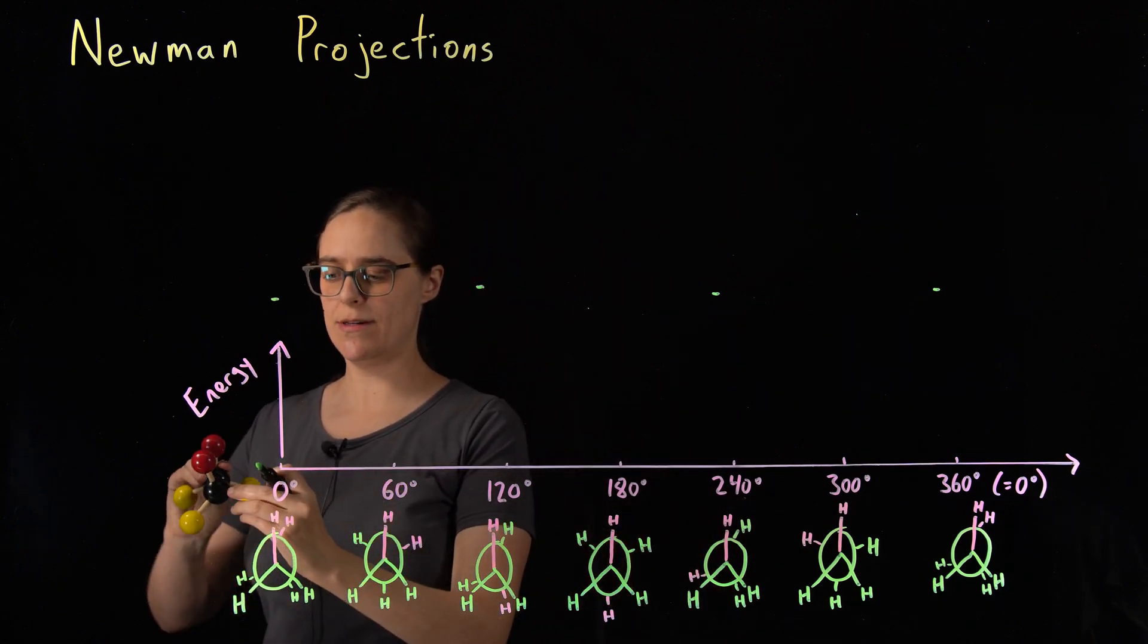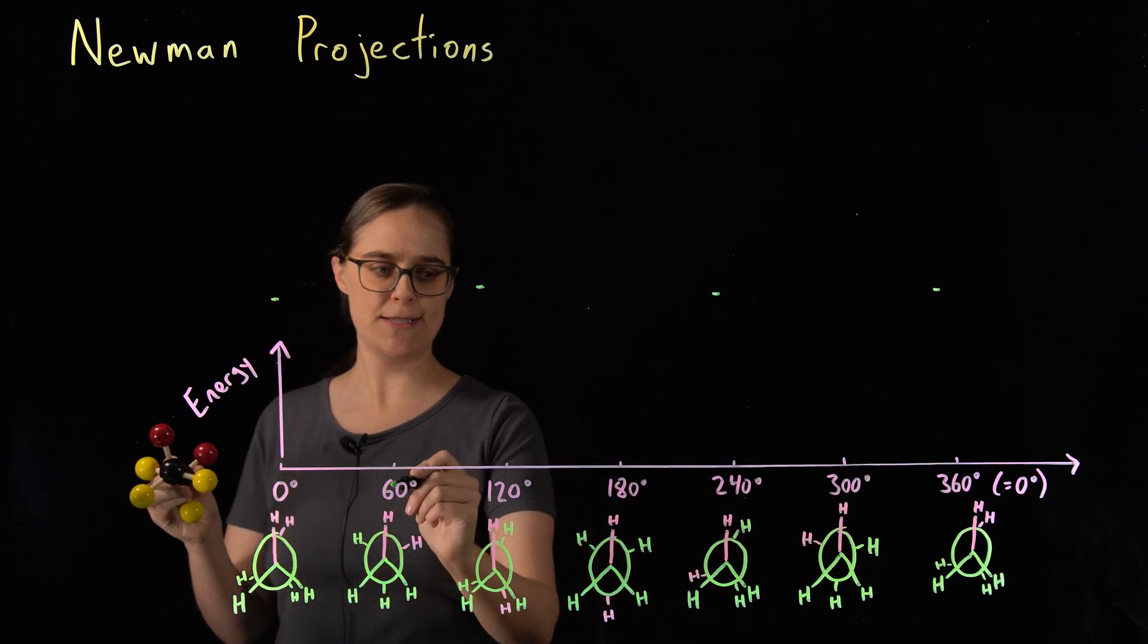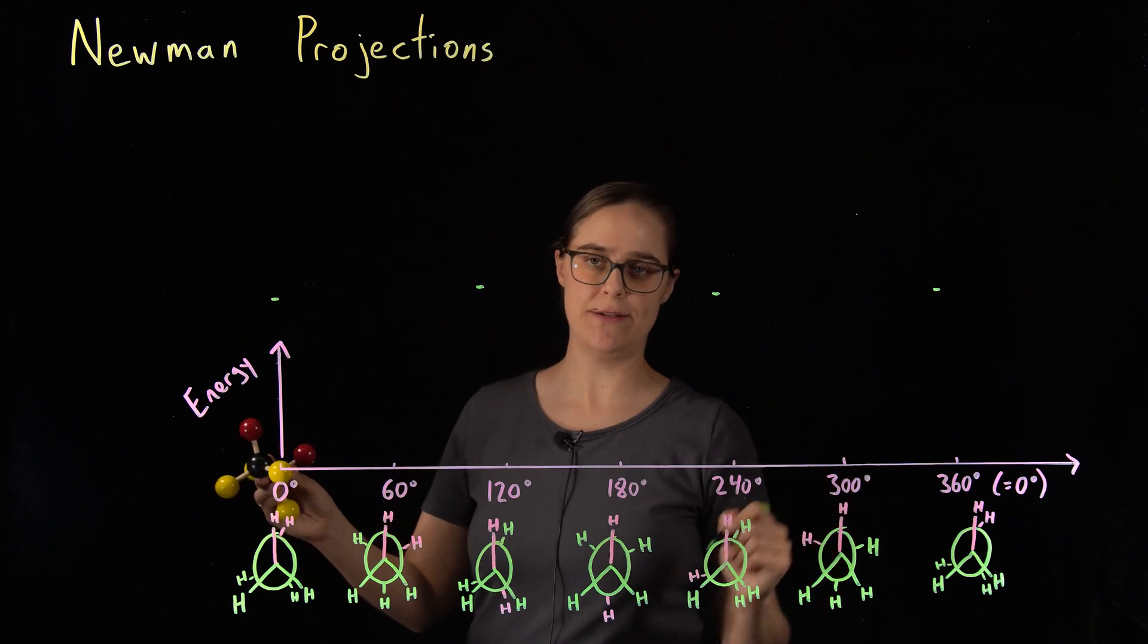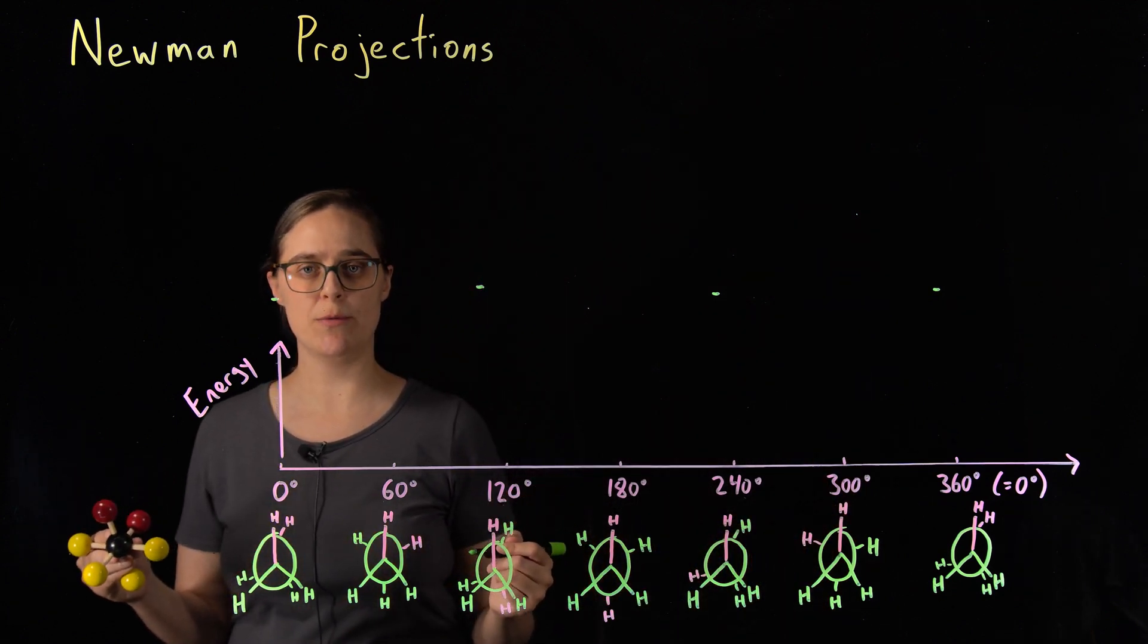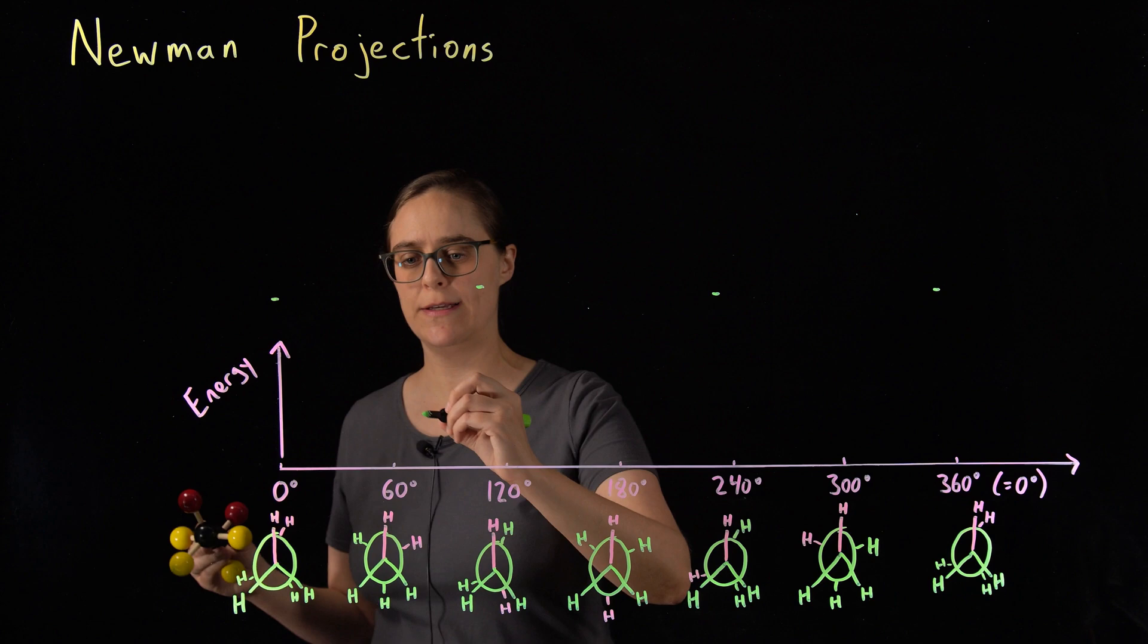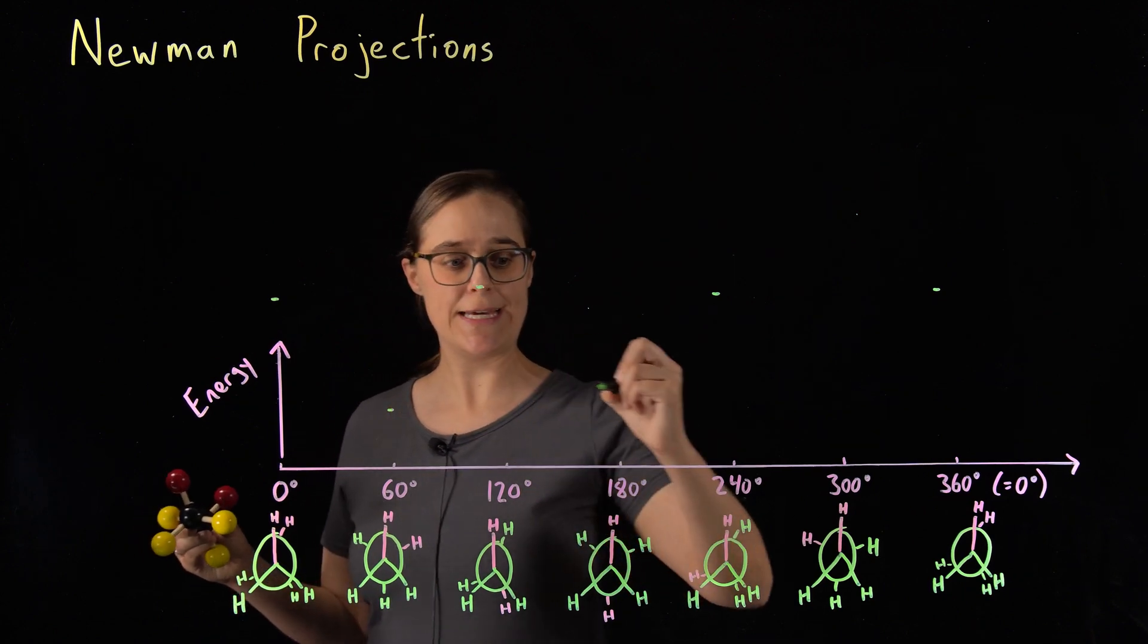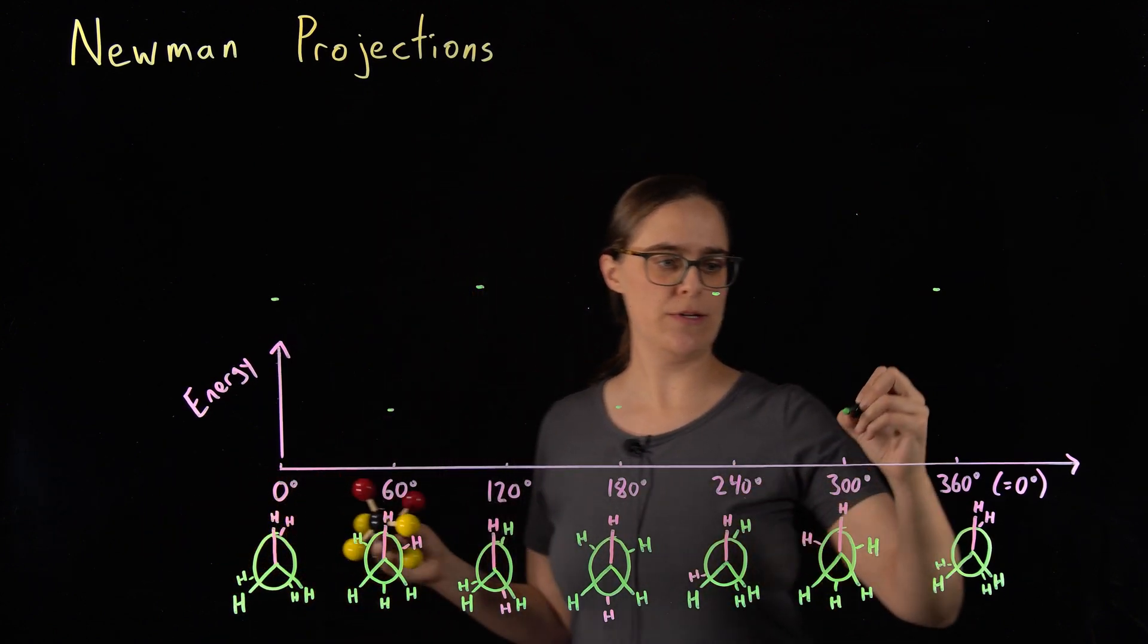All of the staggered conformations, as in 60 degrees, 180 degrees, and 300 degrees, these are going to be more stable and have lower energy. They are all going to have the same energy as each other, but they are all going to be something lower.